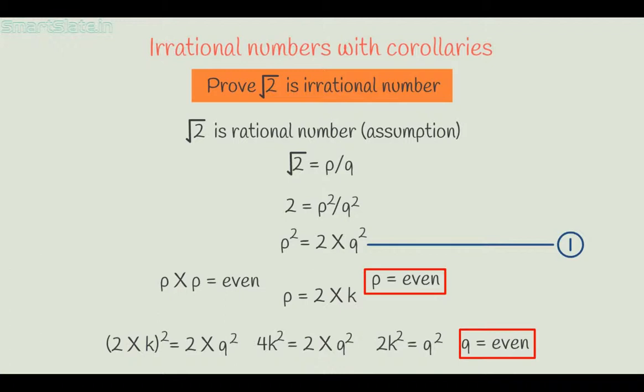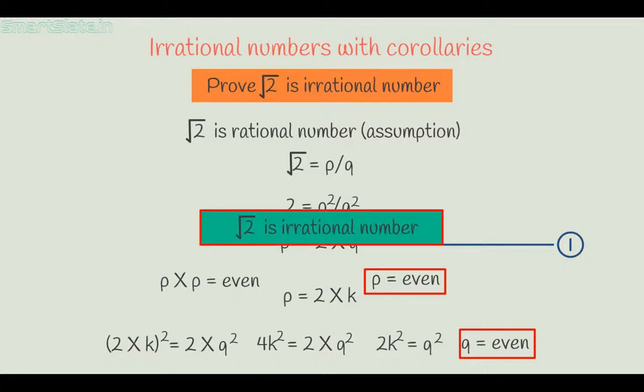Since both p and q are even, they have 2 as a common factor. Since these two numbers have a common factor other than 1, they are not co-primes. This contradicts our assumption that p and q are co-primes. Therefore, our assumption that the square root of 2 is a rational number is wrong. Hence, the square root of 2 is an irrational number.